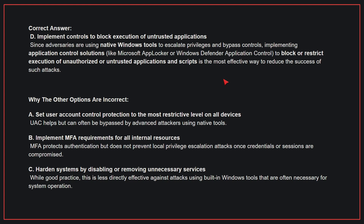Why the other options are incorrect: A — set user account control protection to the most restrictive level on all devices. UAC helps but can often be bypassed by advanced attackers using native tools. B — implement MFA requirements for all internal resources. MFA protects authentication but does not prevent local privilege escalation attacks once credentials or sessions are compromised. C — harden systems by disabling or removing unnecessary services. While good practice, this is less directly effective against attacks using built-in Windows tools that are often necessary for system operation. Therefore, the correct answer is D.